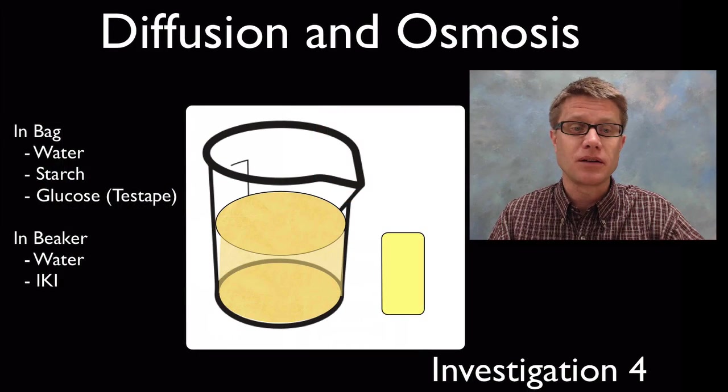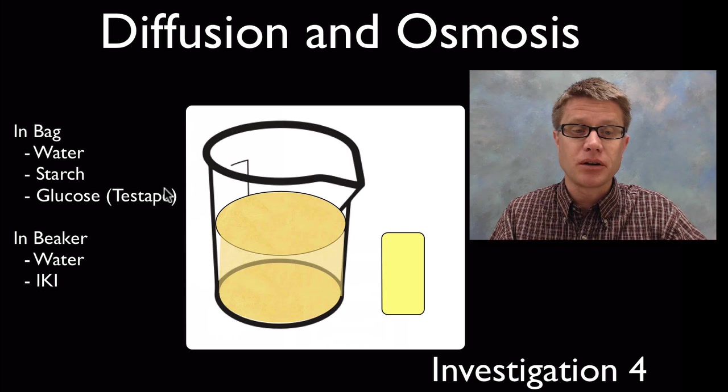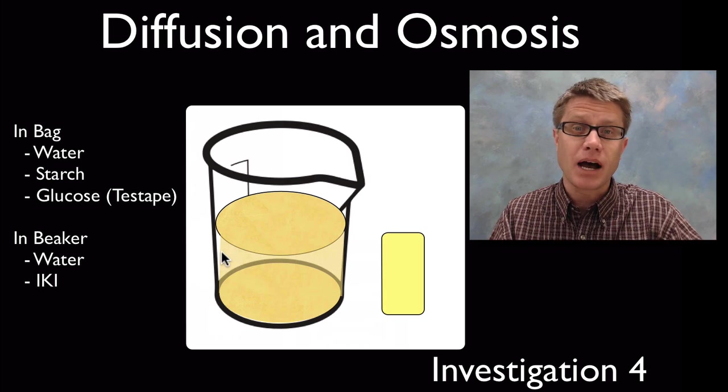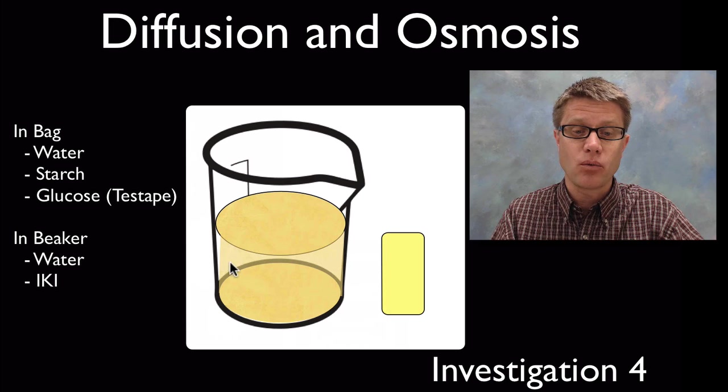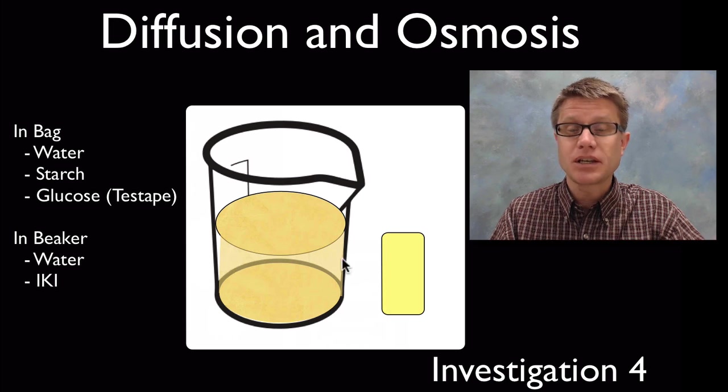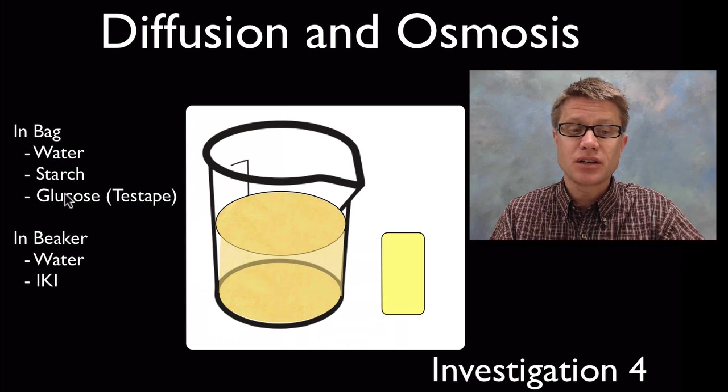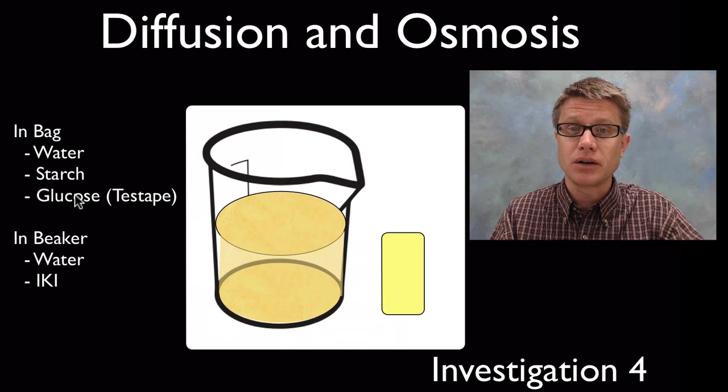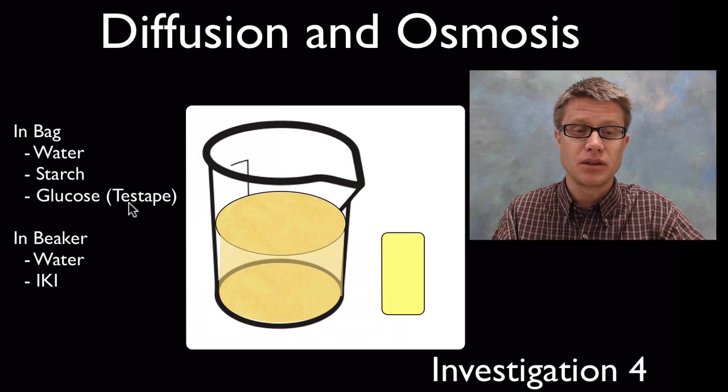Next one is another qualitative analysis. In this one we're looking at diffusion. What you start with in this beaker is water and IKI. IKI is simply a source of iodine. In here we've got water and IKI. Then we have a dialysis bag, and in the dialysis bag we've got water, starch, and glucose. A way to figure out if you have glucose or not is to use test tape. You put that into the solution and if it turns a color, you've got glucose in there.